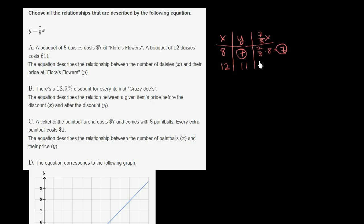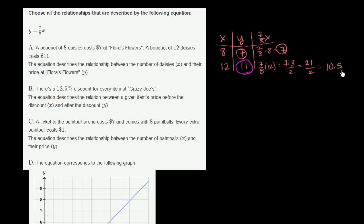Now let's look at 7 eighths of 12. If we divide 12 and 8 each by 4, this is the same as 7 times 3 over 2, which is 21 over 2, which equals 10.5. So if y were equal to 7 eighths x, 12 daisies would cost $10.50. But we were told 12 daisies cost $11. So these two aren't equal — y does not equal 7 eighths x here. We can rule this one out.